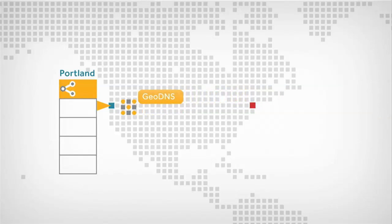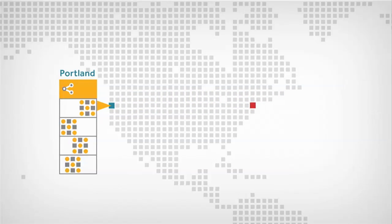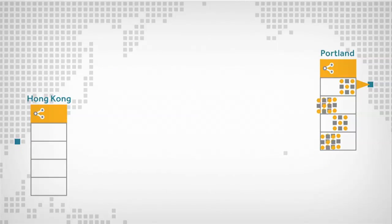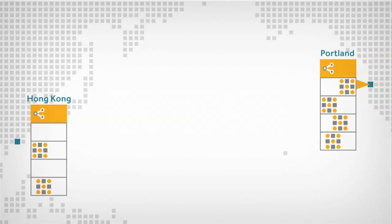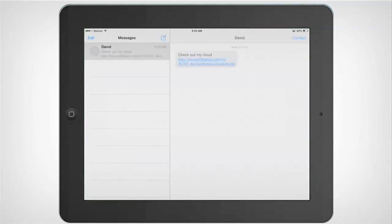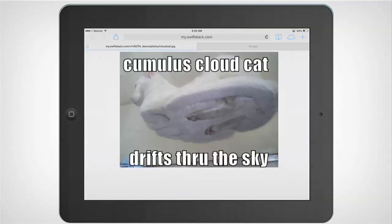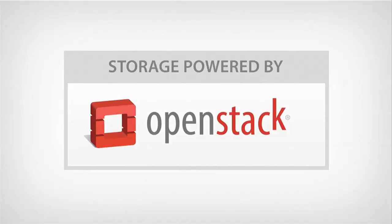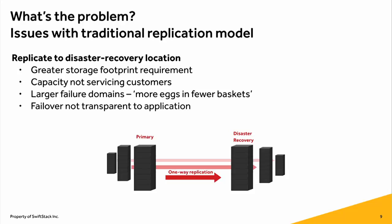They wanted the ability to upload entirely in one region, and also to read that data from another region. Using Hong Kong as an example, data gets replicated asynchronously over to that environment. Another user, if they want to access that data and they're further away, can pull up that object — a GeoDNS will grab that object and pull it in. So depending on where the user is, they'll be redirected to a different data center.